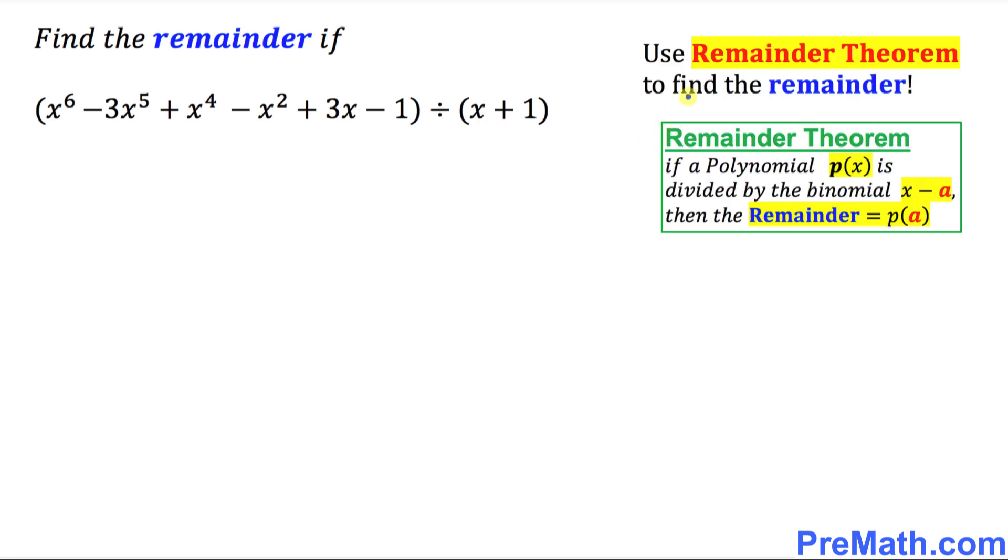So the easiest possible method is called remainder theorem. We're going to be using this one to find the remainder. The remainder theorem states if a polynomial p(x) is divided by the binomial x minus a, then the remainder is going to be equal to p(a).